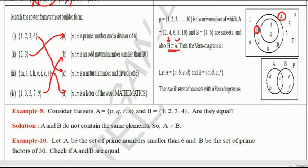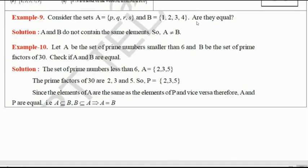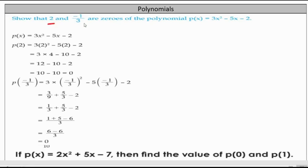Illustrate with the help of Venn diagram. P, Q, R, S and 1, 2, 3, 4, are they equal? A and B do not have the same elements, so A is not equal to B. Polynomials: show that 2 and minus 1 by 3 are zeros. If zeros are true, these numbers at x place replace will give answer zero.